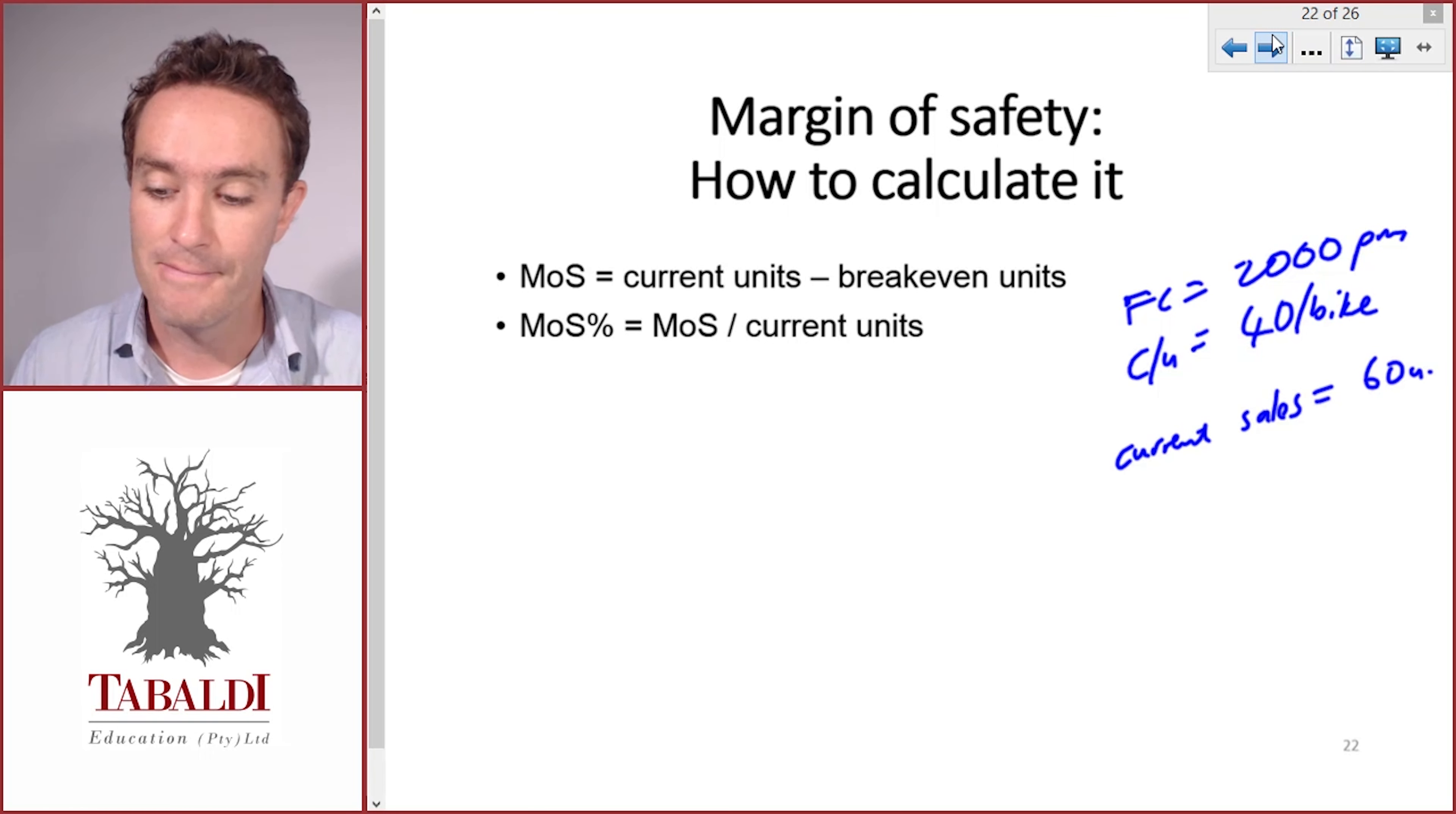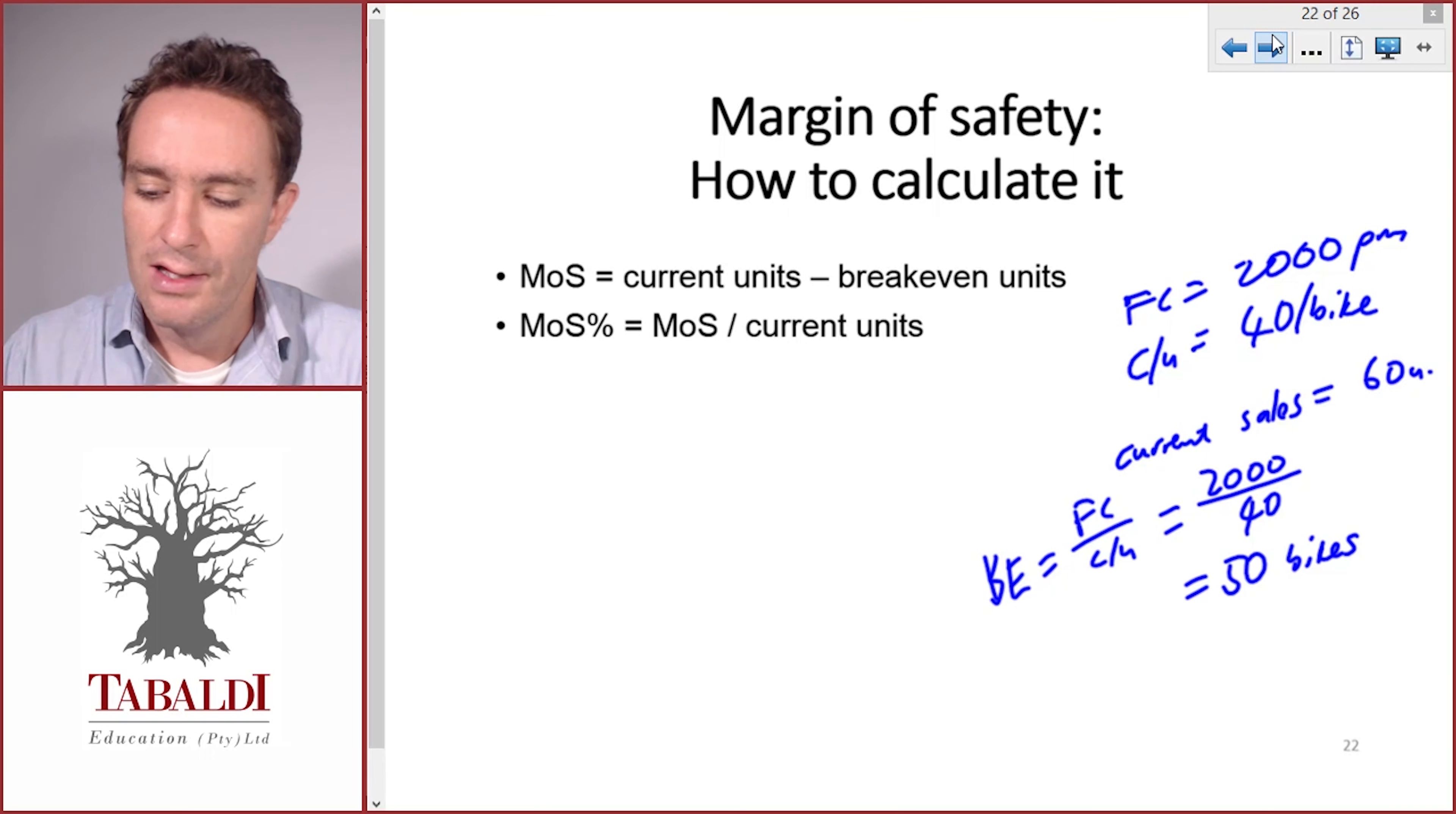Break-even equals fixed cost divided by contribution per unit. That's our fixed cost of 2,000 divided by contribution of 40 per unit. Our break-even point is 50 bikes. We're currently selling 60 bikes.